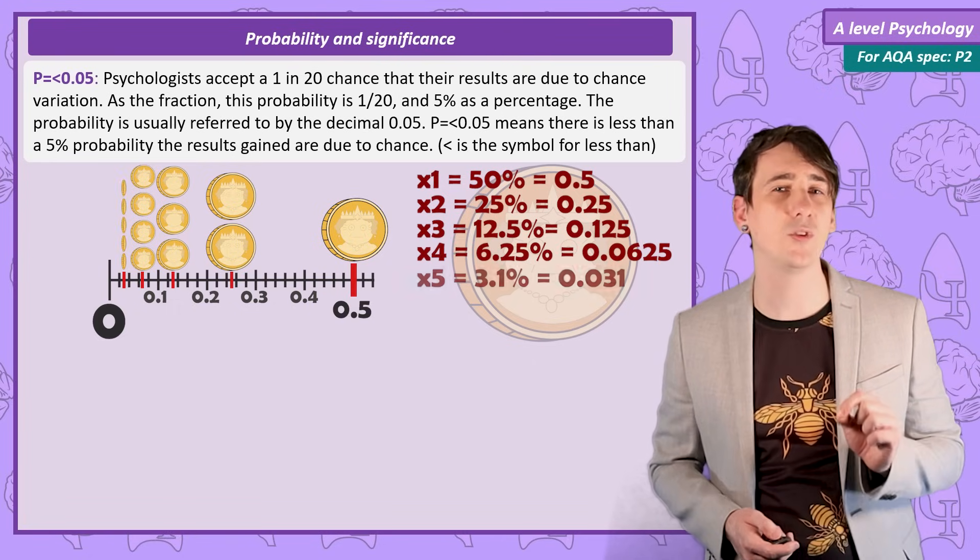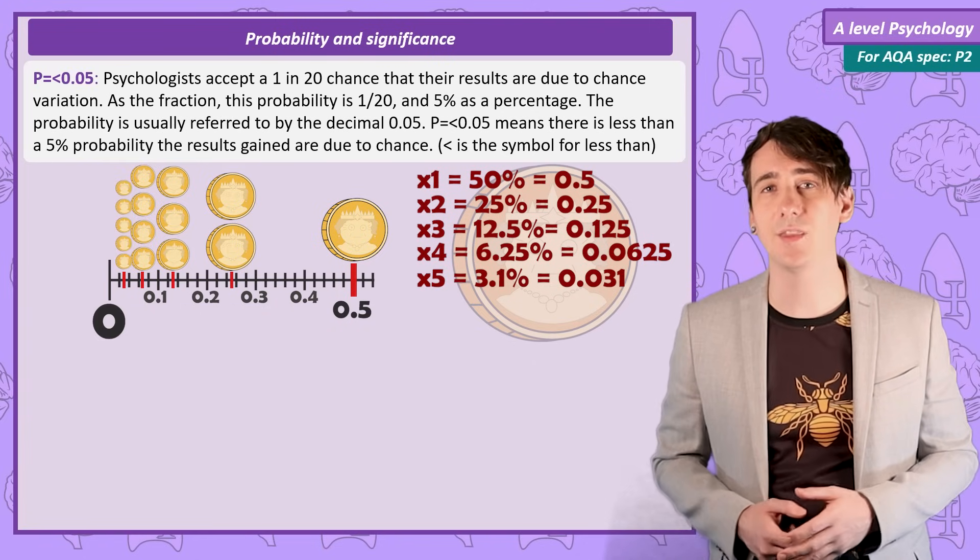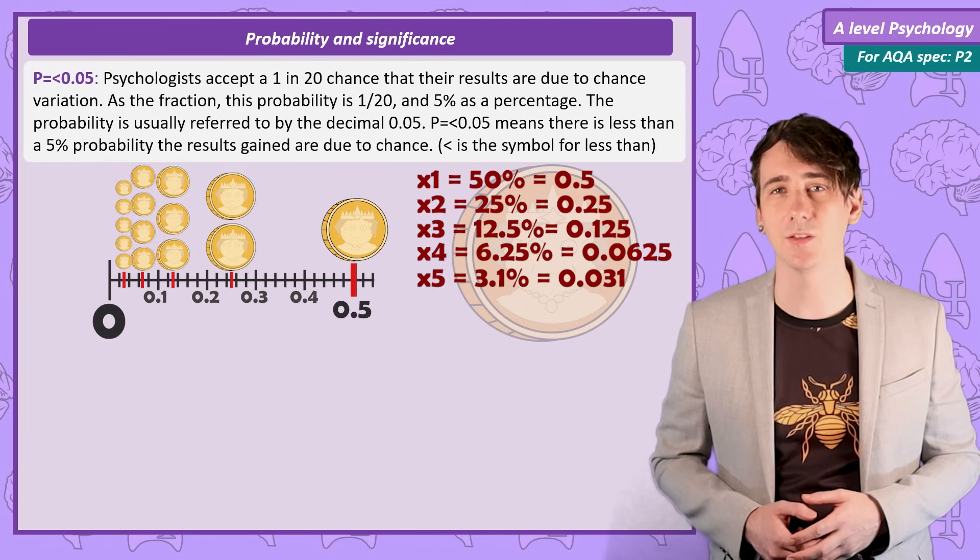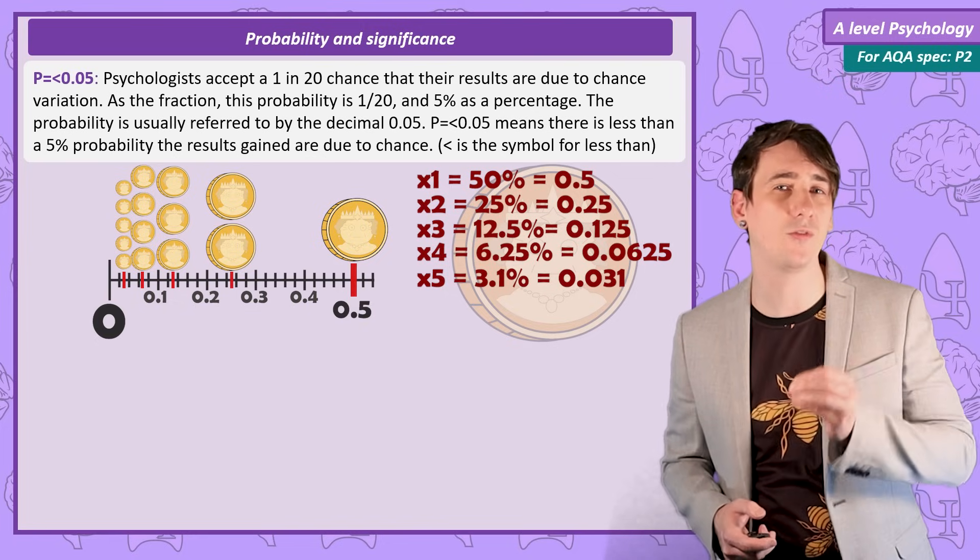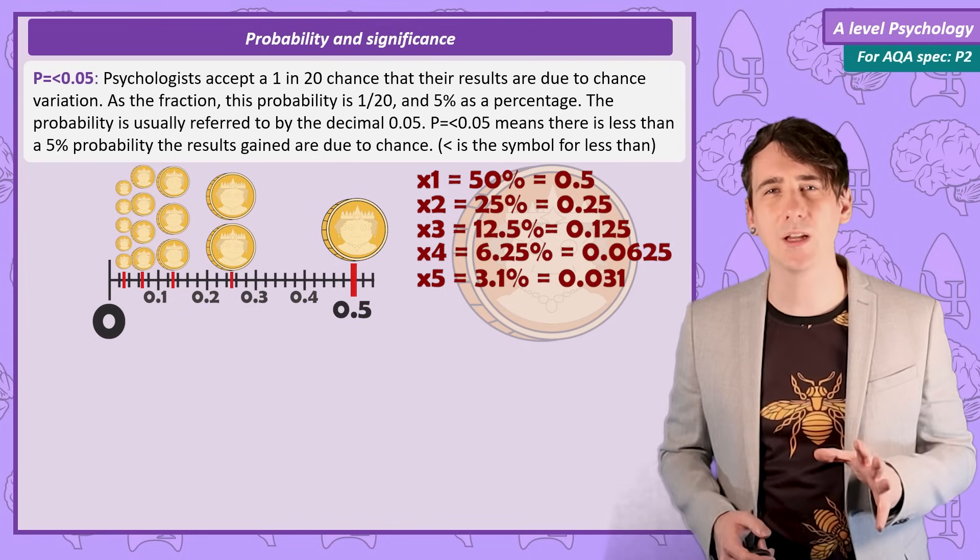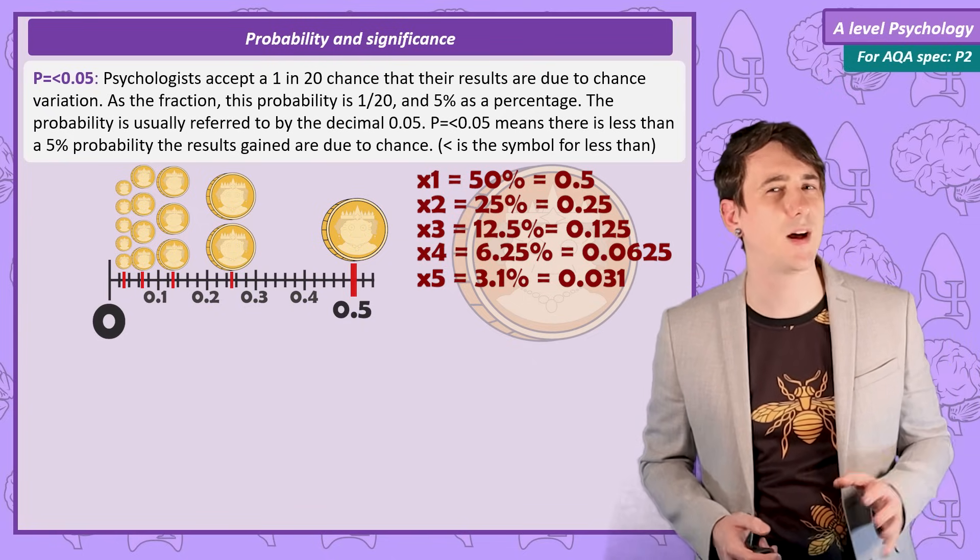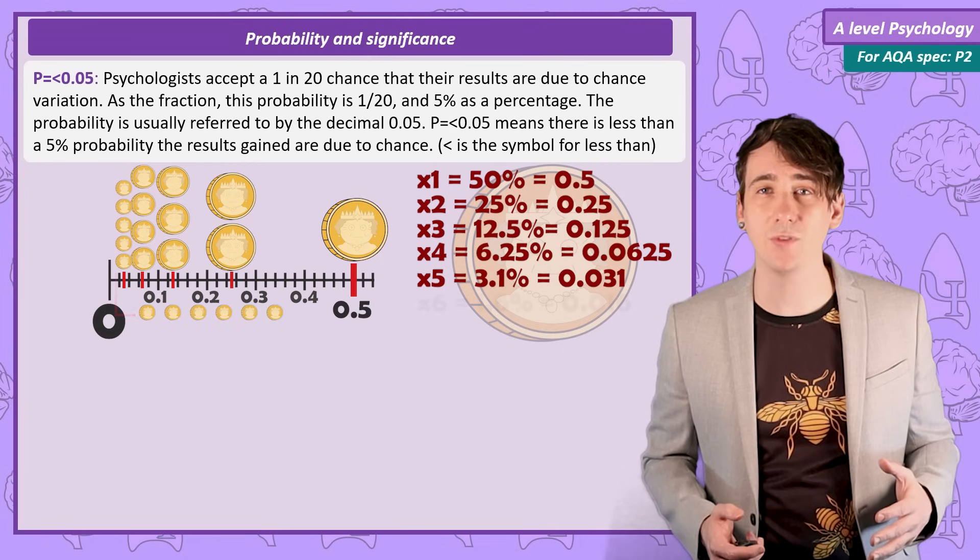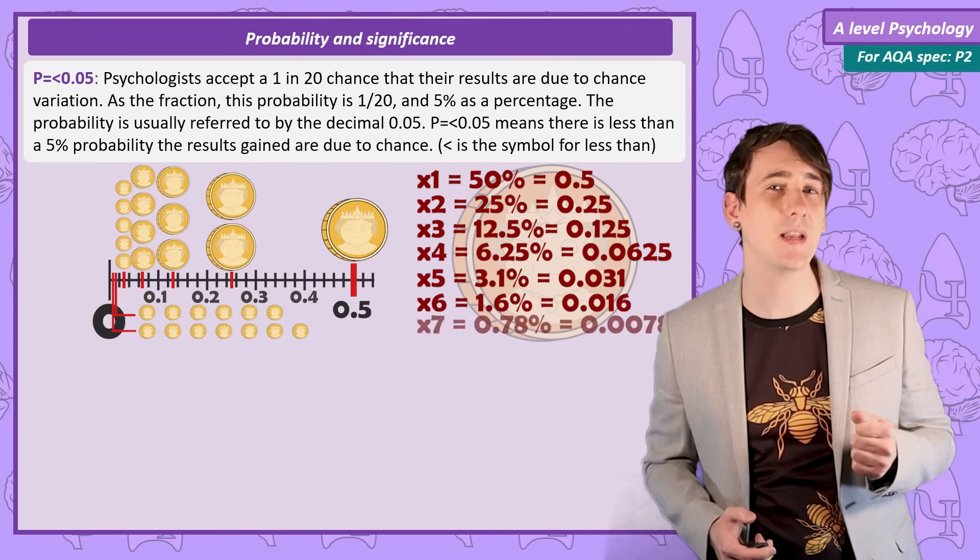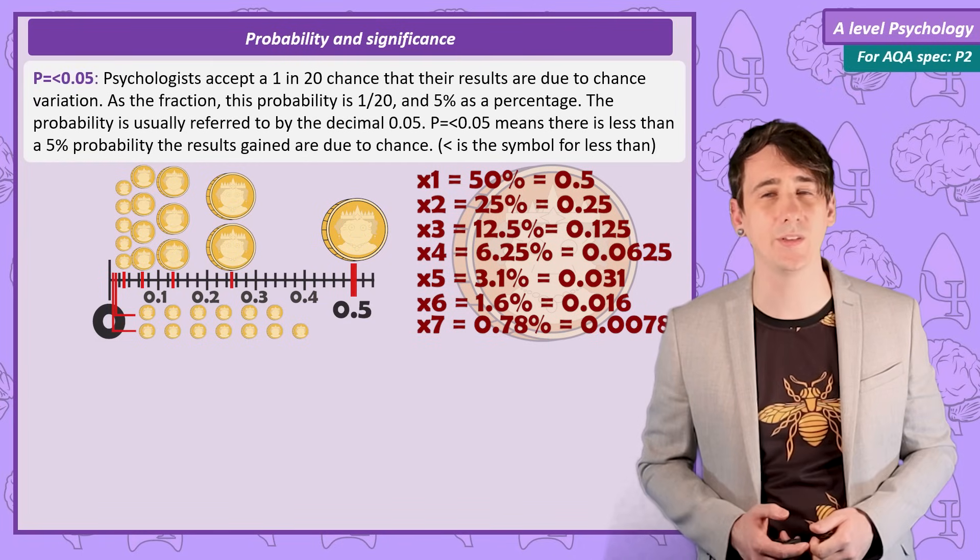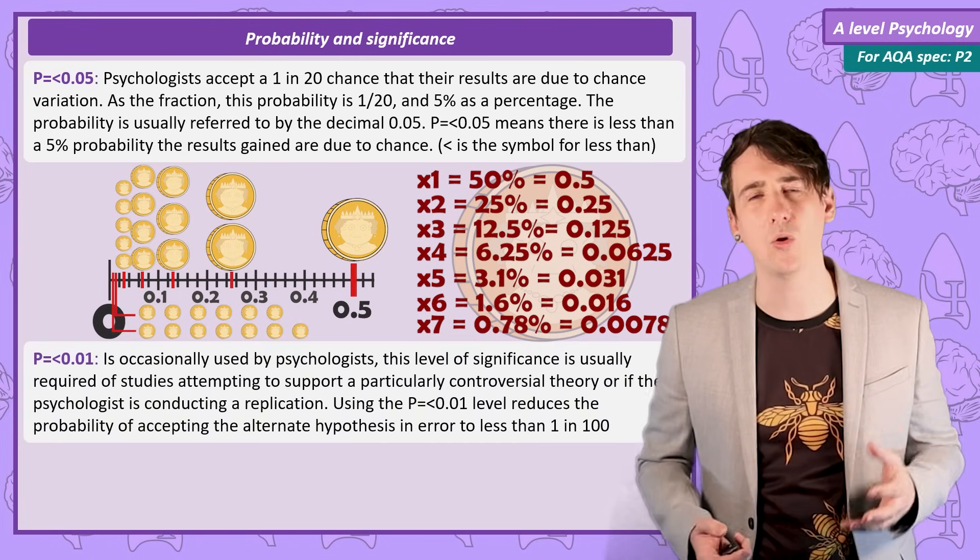So this is less than the 5% level of something happening by chance, the ones psychologists accept. It's between the chance of 4 or 5 heads in a row. But I'm trying to convince you of my psychic powers, so you might want to be more certain than 5%. At 6 coin flips, I'm at 1.6 probability, and at 7 heads, I'm now under the 1% level of probability that psychologists will use for a particularly controversial study or a replication.